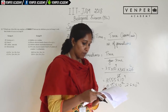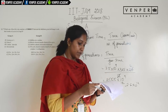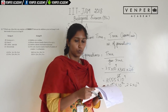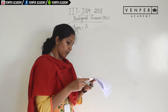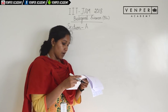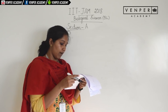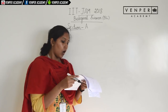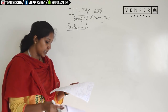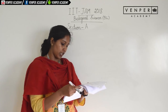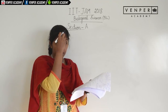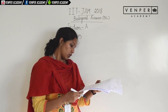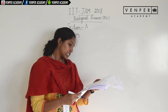Question 27: match the inhibitors in group A with their modes of action in group B. The compounds — antimycin, amytal, carbon monoxide, and atractyloside — are all inhibitors of the electron transport chain. The answer for question 27 is option A.